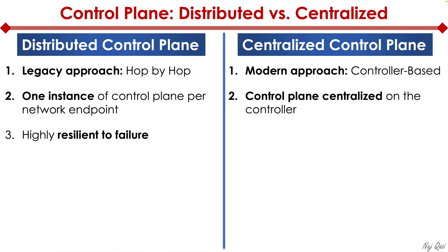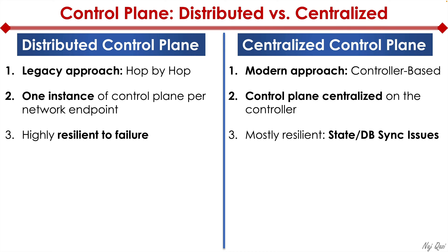Distributed control plane has a big benefit when it comes to network resiliency — it's resilient to failure — whereas the centralized control plane could potentially become a single point of failure unless we have redundant controllers configured in our network. Another big issue could be the synchronization of the state of our network. If we have two controllers and controller one knows about all the network endpoints but controller two only knows about half of those devices, we have a database sync issue that can cause problems maintaining the state of our network at any given point in time.